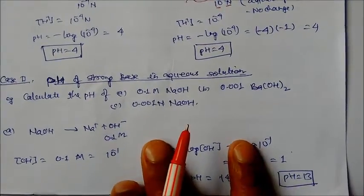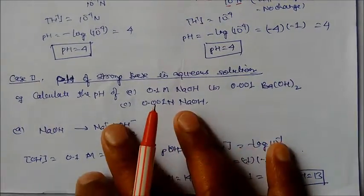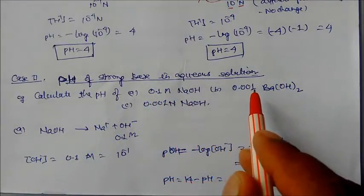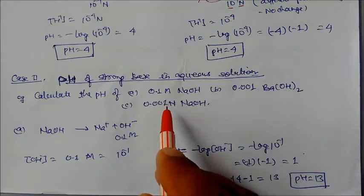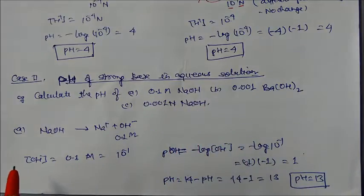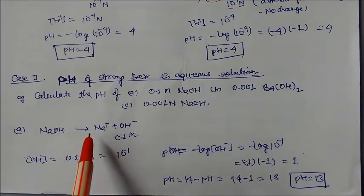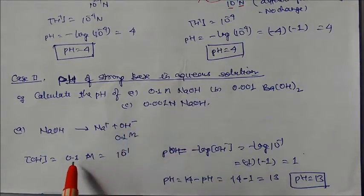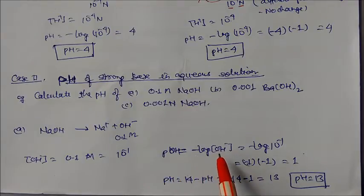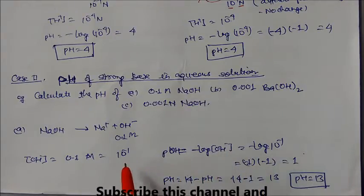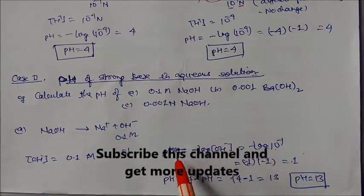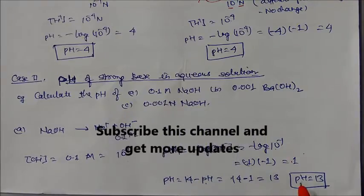Case 2: pH of strong base in aqueous solution. Example (A): 0.1 molarity NaOH. NaOH dissociates into Na⁺ and OH⁻, so [OH⁻] = 0.1 = 10⁻¹. pOH = −log[OH⁻] = 1. Therefore, pH = 14 − pOH = 13.